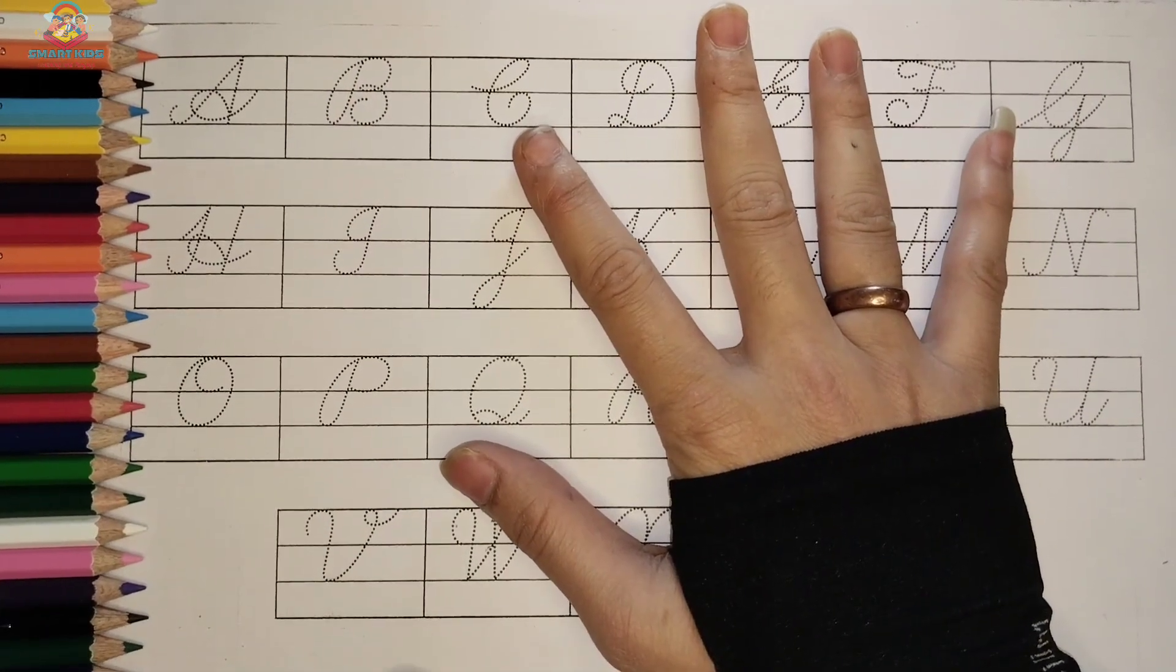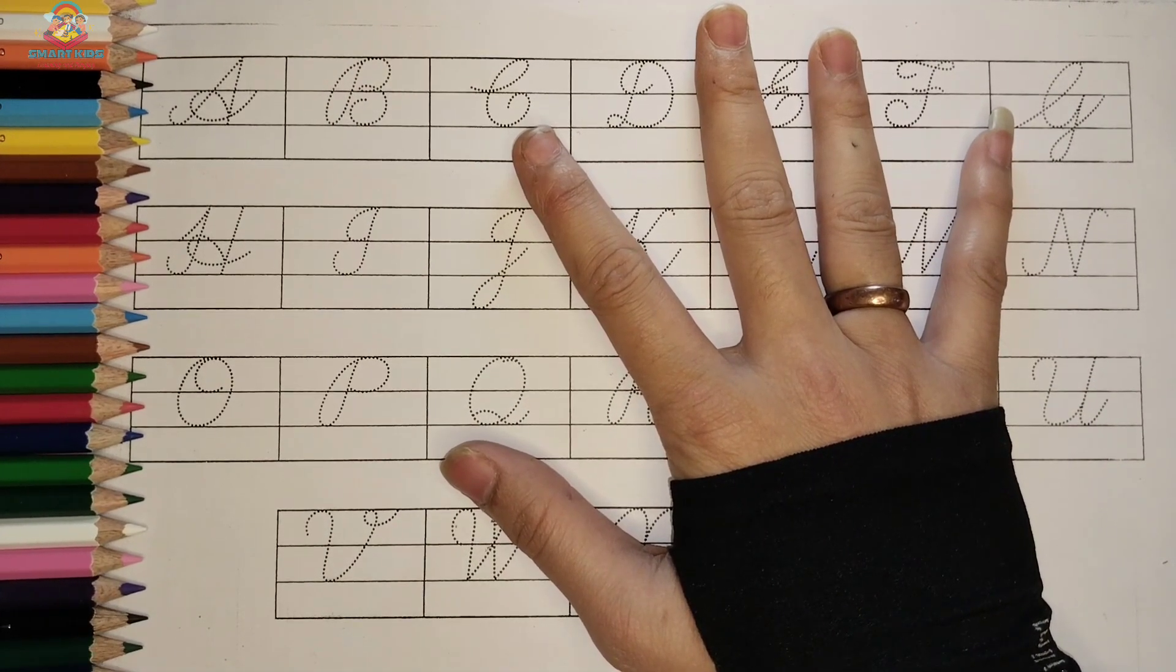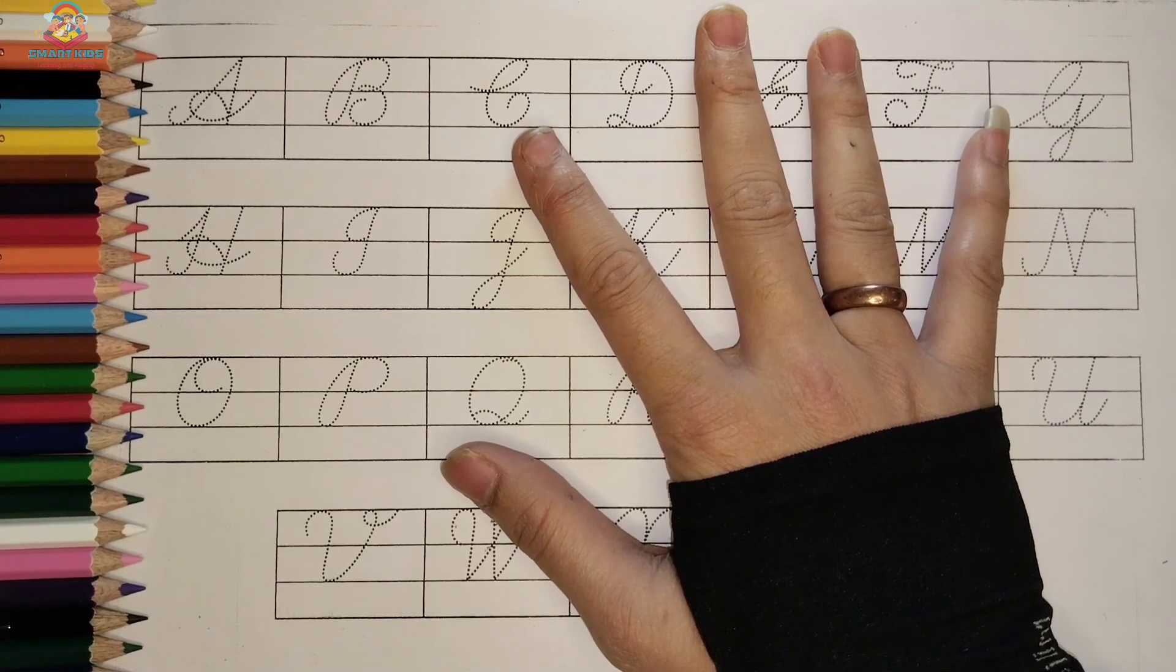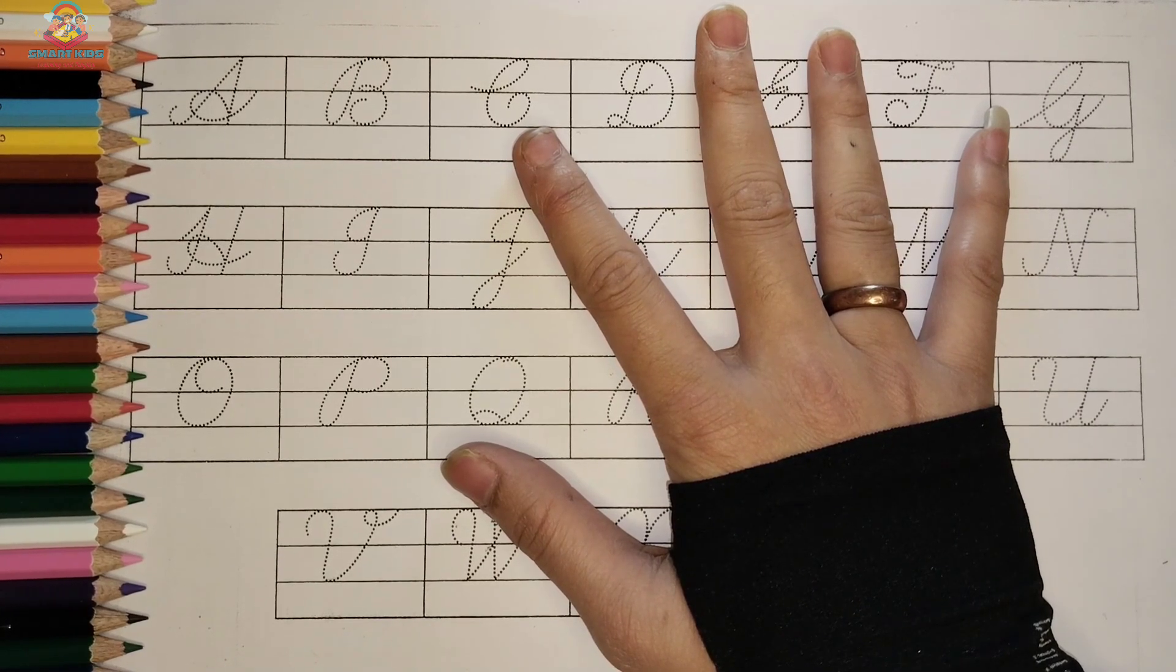Hello, Bacho! Welcome, welcome to Smart Kids. Today we will learn Big A, B, C, D, Cursive Letter A, B, C, D. Okay?